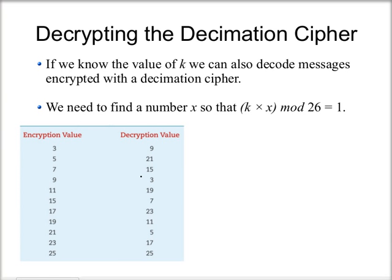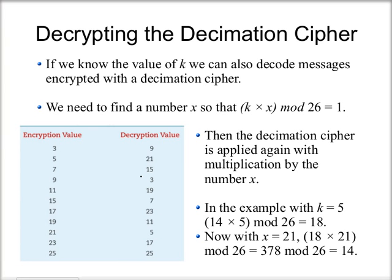We can also decrypt the Decimation Cipher. If we know the value of K that was used to encrypt the message, we need to find a number X such that K times X mod 26 equals 1. Then applying the Decimation Cipher again with multiplication by X will decrypt the message. In the example, K equals 5 took 14 to 18. A provided table shows the decryption value for each encryption value. Since K equals 5, to decrypt we use X equals 21, and that takes 18 back to 14, undoing the encryption. That's the first part of this section — in the next video, we'll look at two more encryption schemes.